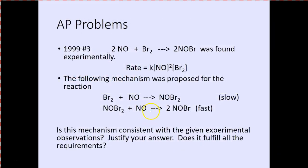AP problem: 1999, number three. 2NO + Br2 → 2NOBr was found experimentally to have a certain rate law. The following mechanism was proposed: slow step — Br2 + NO → NOBr2, and fast step — NOBr2 + NO → 2NOBr. Is this mechanism consistent with the given experimental observation? Justify your answer — does it fulfill all the requirements?